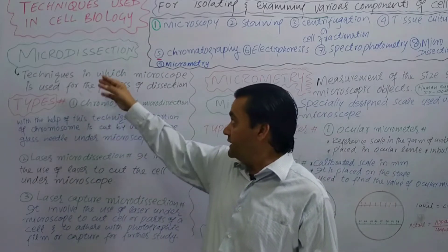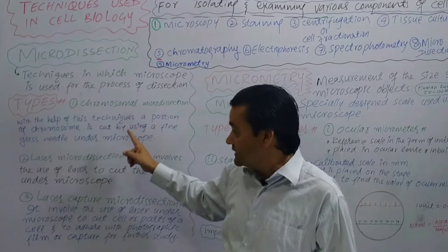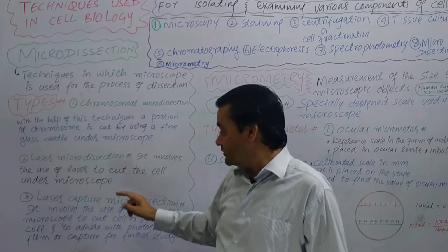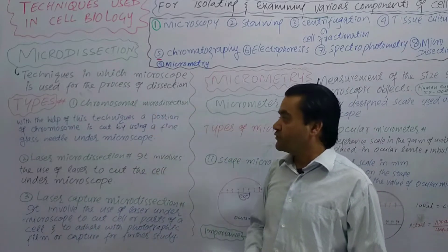The method is micro dissection. The first type is chromosome micro dissection. The second is laser micro dissection. The third is laser capture micro dissection.